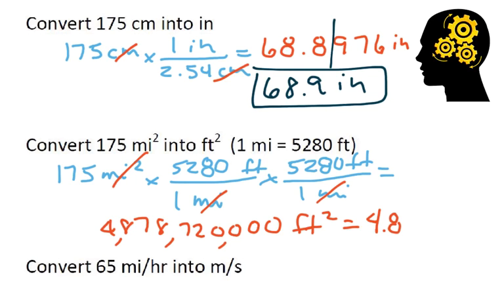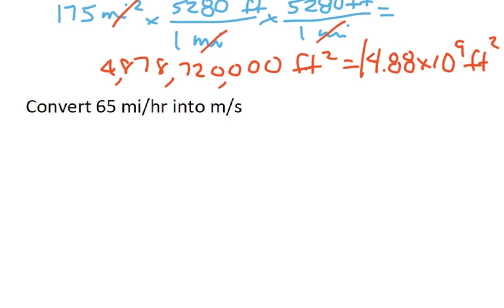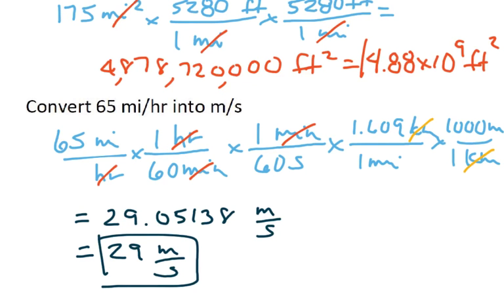I'm going to call that 4.88 times 10 to the 9 feet squared. Let's look at the last problem. Here I've set up this problem. I had to go from 65 miles per hour. I went ahead and did the hours first. Hours goes to minutes, minutes goes to seconds. So I have seconds. Then I want to get rid of my miles. Miles I did to kilometers, and then kilometers to meters. So I have the meters. I multiply all the top numbers, divide by the bottom numbers. I got 29.05138. I only had two significant figures, so I rounded it off to 29. And that's the practice problems.